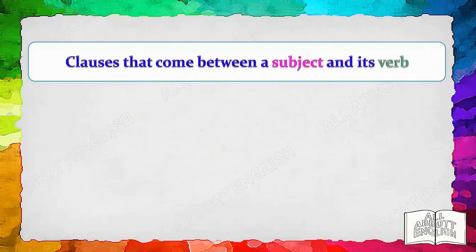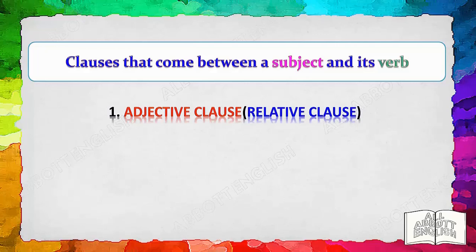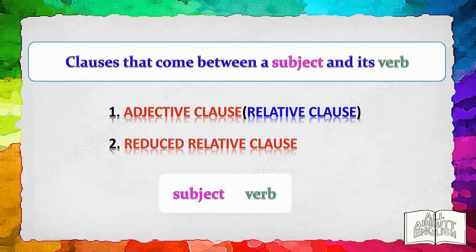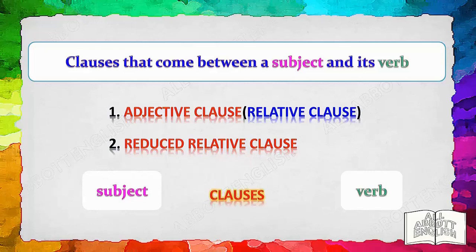Subject-verb agreement errors often result from word placement in sentences. In this lesson, we shall move on to look at some specific types of clauses that often come between a subject and a verb. They are adjective clauses, also known as relative clauses. Related to this is the reduced relative clause. It is useful to know what they are because they sometimes complicate subject-verb agreement by coming between the true subject and its verb. Once we have identified them, we can manually remove them, making it easier to determine the true subject and avoid errors.